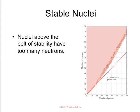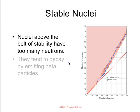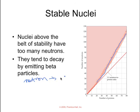Stable nuclei. If we look at this belt of stability, this shaded area here, isotopes or nuclei that are above that belt of stability have too many neutrons. They would typically decay by emitting a beta particle. By emitting a beta particle, we are taking a neutron and making it into a proton, which would alter that ratio of neutrons to protons in favor of bringing it down into the belt of stability.